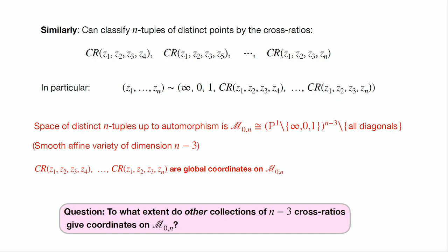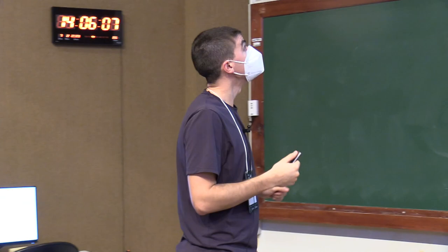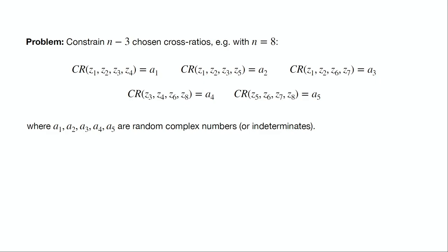This is a smooth affine variety of dimension n minus three with a nice set of global coordinates. If you tell me these n minus three cross-ratios, that uniquely gives a point of M0n. The question I want to focus on is: to what extent can we write down other lists of cross-ratios of length n minus three to replace this and still get coordinates on M0n? For example, with n equal to eight, I can write down a list of four-tuples: z1,z2,z3,z4 — z1,z2,z3,z5 — and then some others like 1,2,6,7 — 3,4,6,8 — 5,6,7,8.